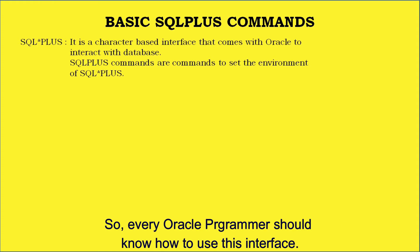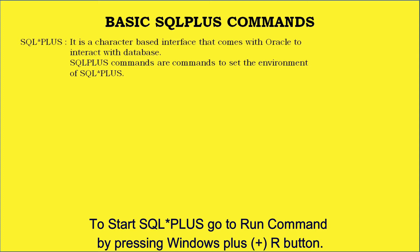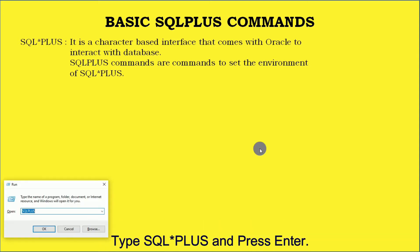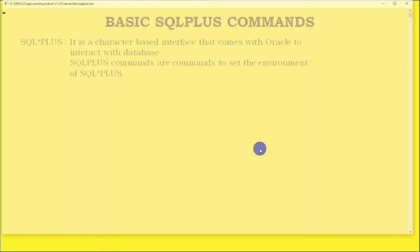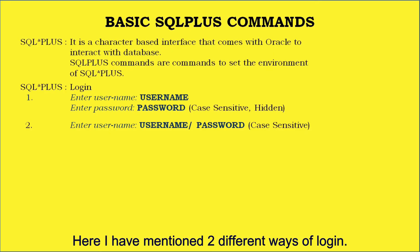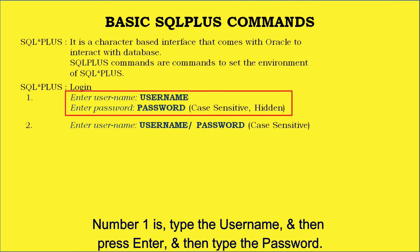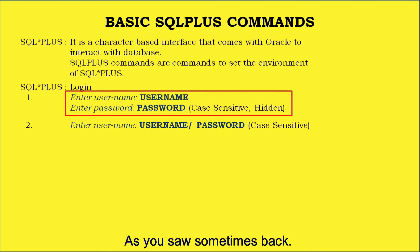Every Oracle programmer should know how to use this interface. To start SQL*Plus, go to the Run command by pressing Windows + R, type sqlplus, and press Enter. SQL*Plus will prompt you for a username, and once you type the username it will prompt you for the password. Here I have mentioned two different ways of login. Method one: type the username, press Enter, then type the password.